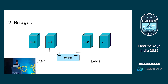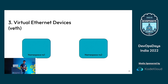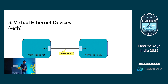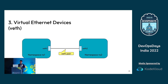The third element is VETH — Virtual Ethernet Devices. I have two namespaces, NS1 and NS2, and I need to enable communication between them. That's where VETH pairs come in. One end is VETH1, another is VETH2. You can visualize it as a cable with two ends, each end being a virtual network interface. If you send packets through one end, they are received on the other end. That's how we enable communication between two namespaces or two containers.